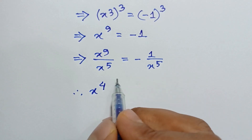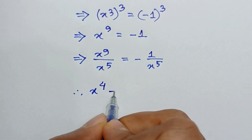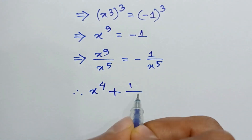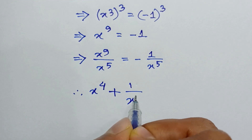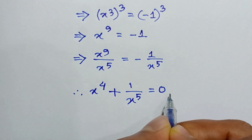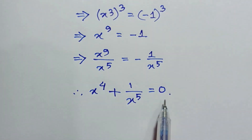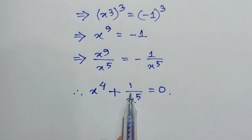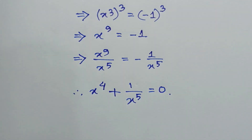Bringing the power 5 to the left side, we can write x to the power 4 plus 1 over x to the power 5 equals 0. So this is the value of x to the power 4 plus 1 over x to the power 5. If you like this video please subscribe to my channel. Thanks for watching.